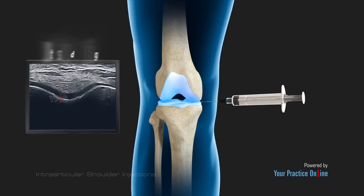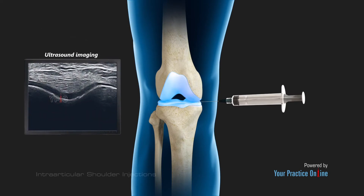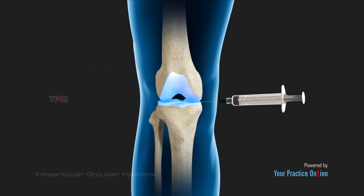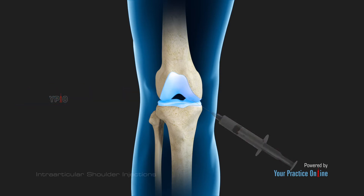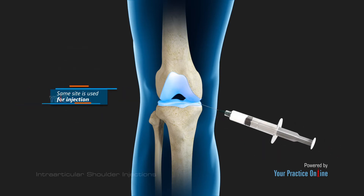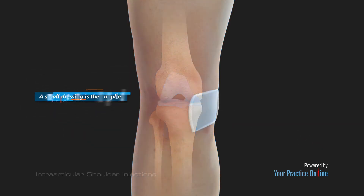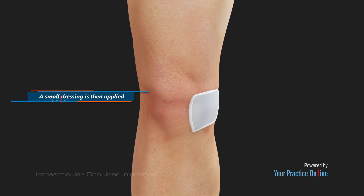In some cases, ultrasound imaging is used to help guide the needle to the correct site. You may feel some mild discomfort during the injection. In some cases, prior to injecting the medicine, a small amount of joint fluid is withdrawn to make space for the medication. Once the fluid is removed, the same site is used to administer the intra-articular injection. A small dressing is then applied over the injection site to complete the procedure.